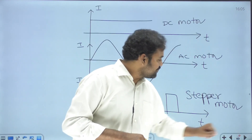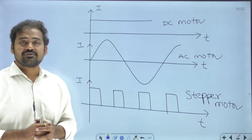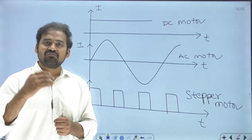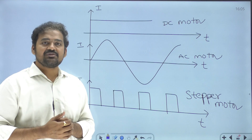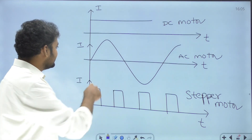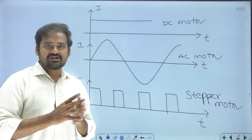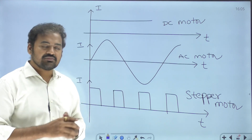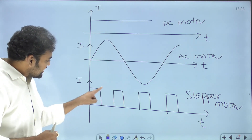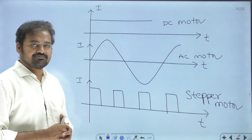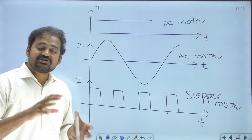Let us talk about the type of input we are going to provide for a stepper motor. If we have a conventional DC motor, the current input we give is a continuous DC supply. If it is a conventional AC motor like an induction motor or synchronous motor, we give continuous AC supply. But in the case of a stepper motor, it will not be a continuous current input. Instead, we will give current pulses as input.